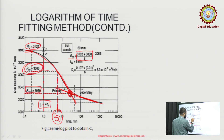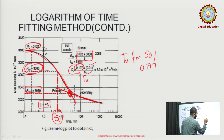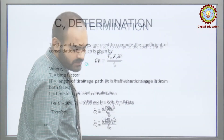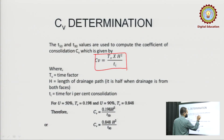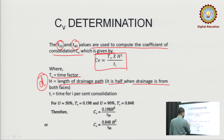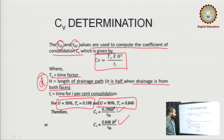To calculate Cv using the same formula Cv = tv × h² / ti: this time we use t50, and tv for 50 percent consolidation is 0.197. For 90 percent tv = 0.848, and for 50 percent tv = 0.197. Just replace the values of tv in the formula to get Cv.